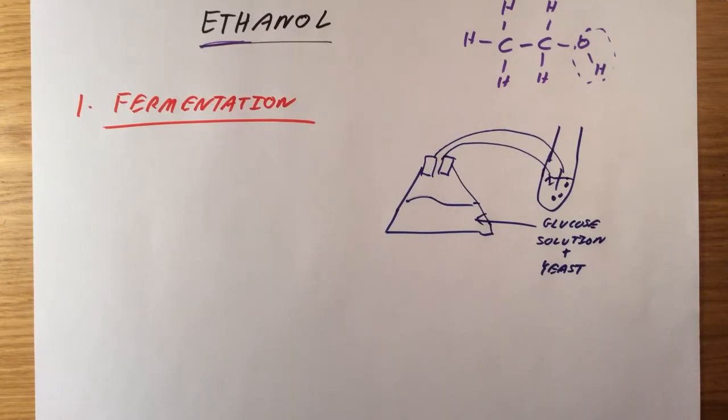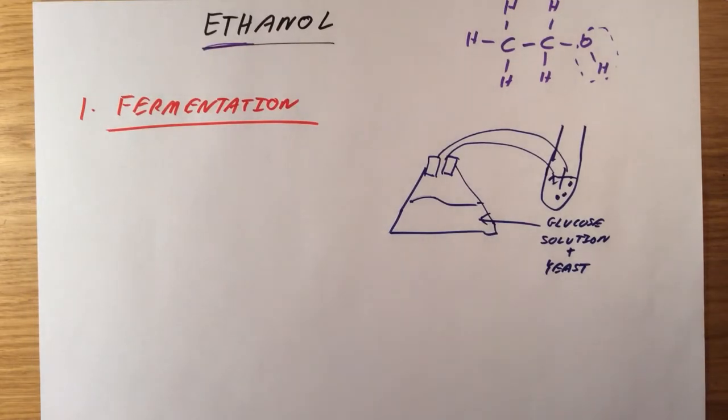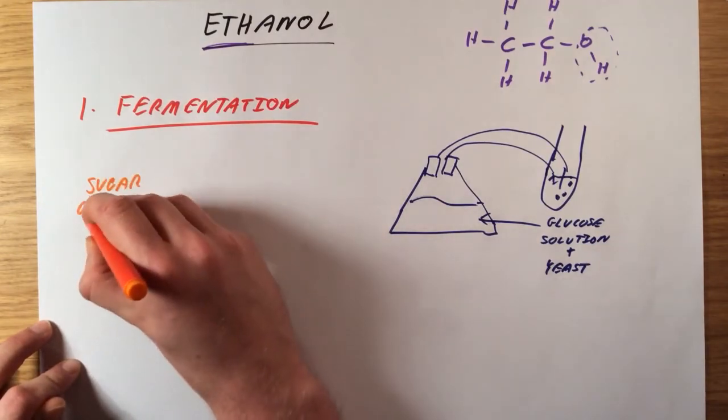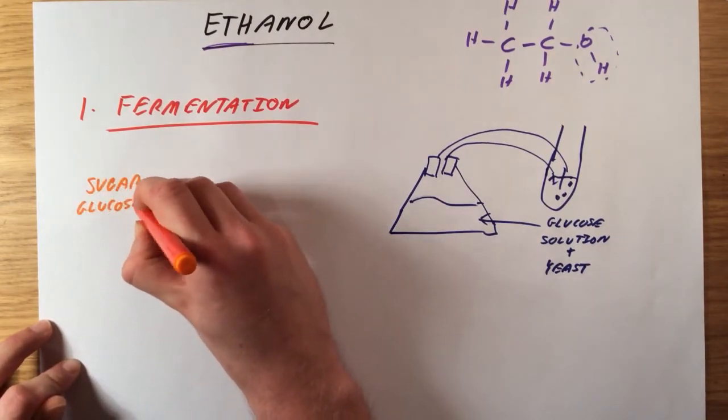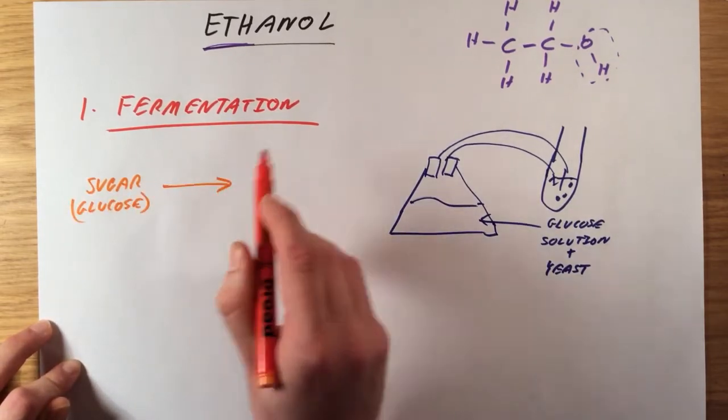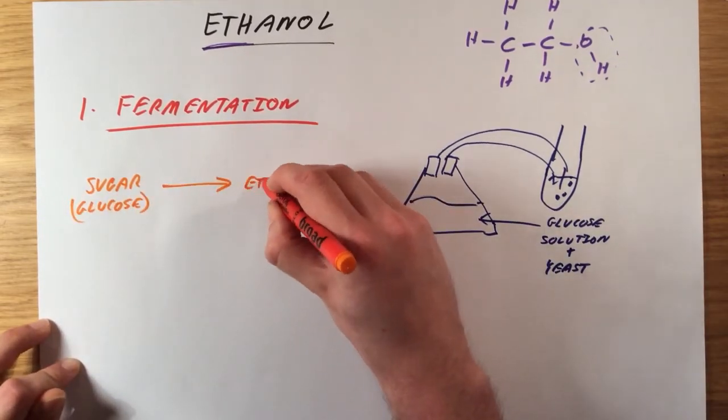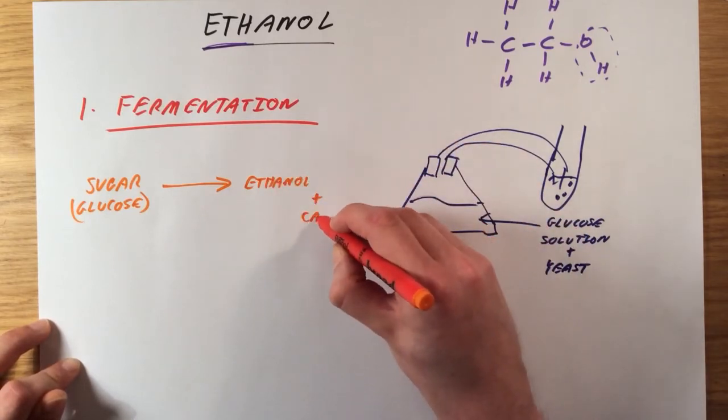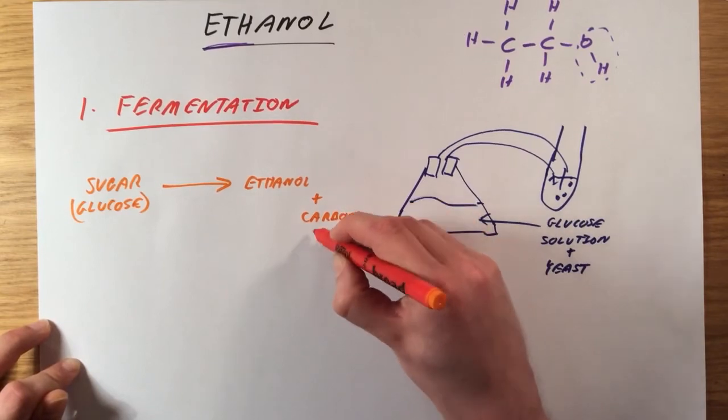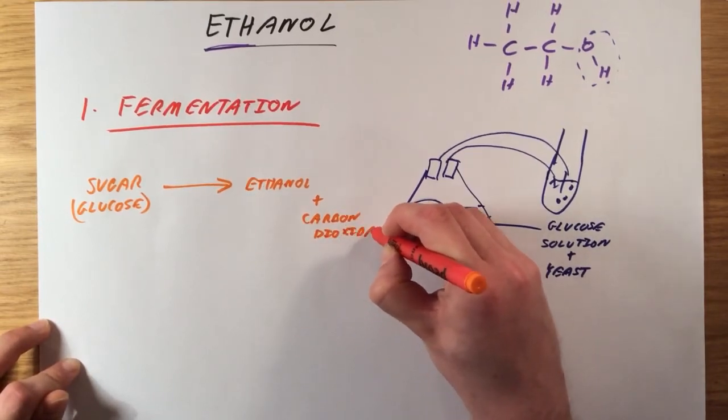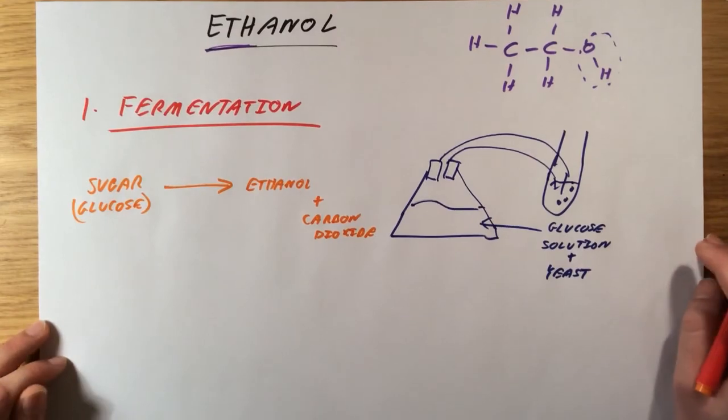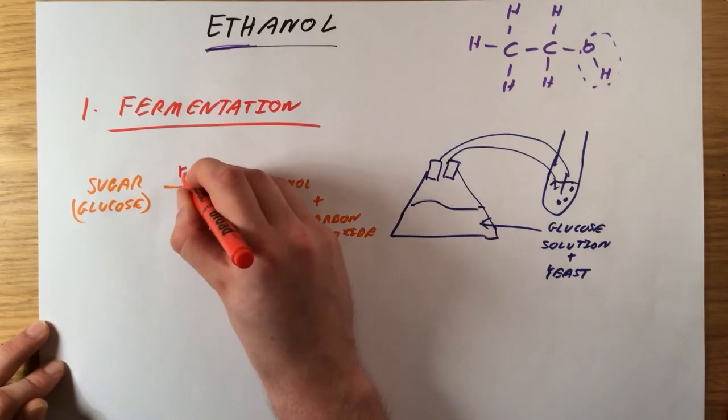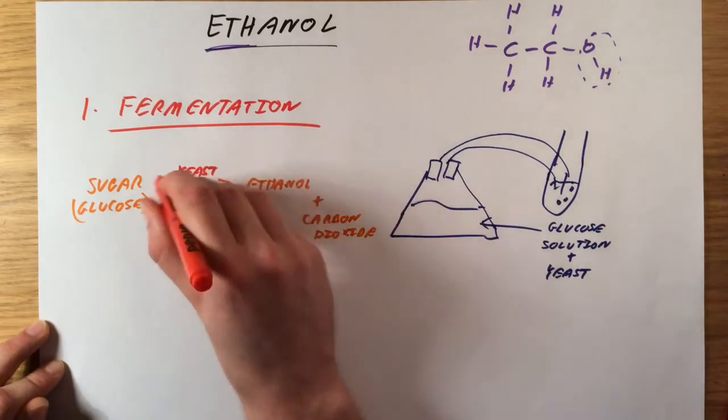If you are going to represent that as a word equation, you would have your sugar or your glucose, either way, and that is going to be broken down into ethanol and carbon dioxide. One thing to note is, the yeast itself is not reacting, it's just acting as a catalyst. So if you do want to include that in the equation, make sure you just include it above the arrow and you don't include it as one of the reactants.